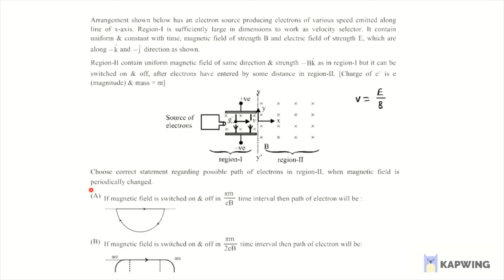Option A says if magnetic field is switched on and off in π m by EB time interval, then path of the electron will be - what happens? Electron moves in circular path in this magnetic field and time period of that circular path can be written as T equals 2π m divided by qB. And here charge q is e and times B, this is the time period. So after half of the time period, magnetic field is switched on and off.